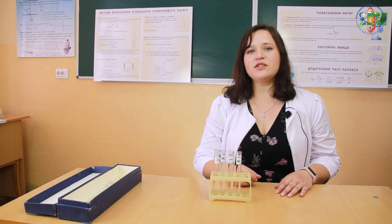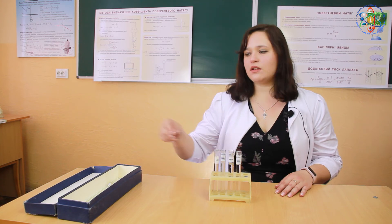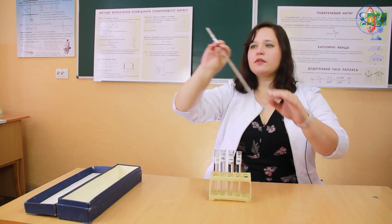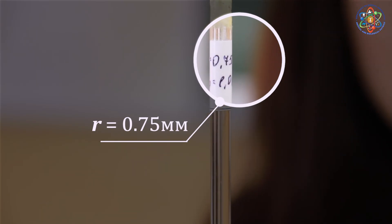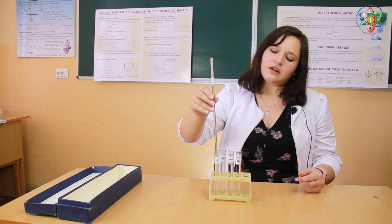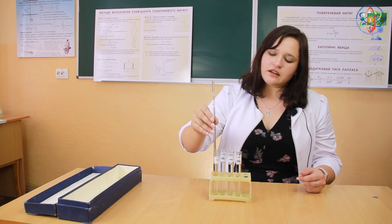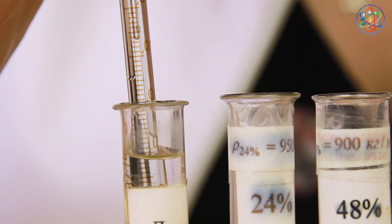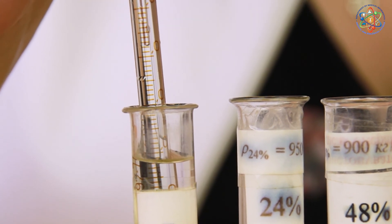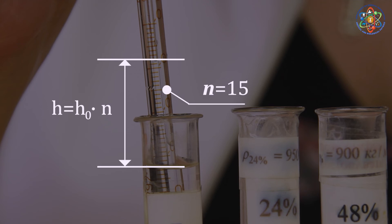Now let us move on to the second method for identifying the surface tension factor for a liquid. We use a capillary with a known radius which equals 0.75 mm. First, we vertically dip the capillary into a tube with a steady liquid — in this case water — and identify the height of the liquid column over the surface in the tube. We multiply the value of units over the number of gradation marks in the liquid column higher than the meniscus. In our case, the number of gradation marks is 15 and the value of units is 1.06 mm.